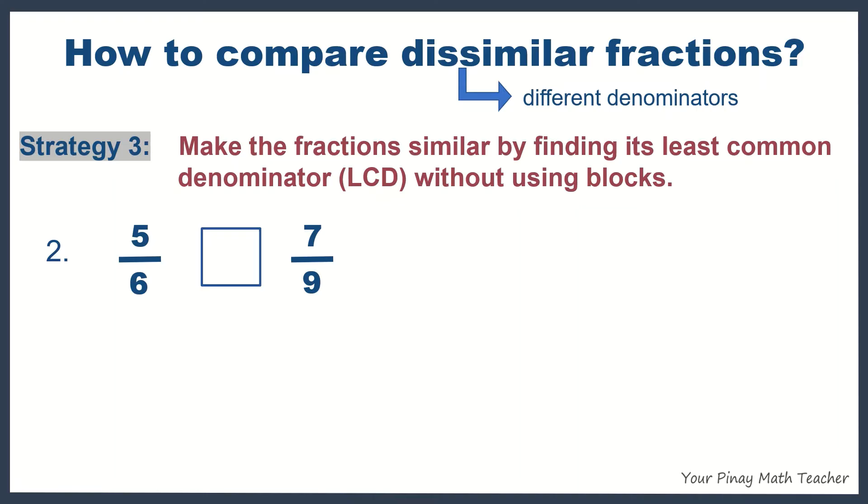Because 5 sixths and 7 ninths have different denominators, then they are dissimilar fractions. So, we have to make them similar.